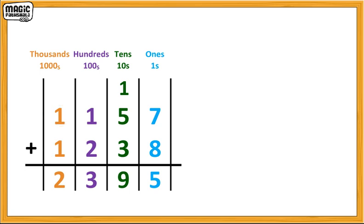So, one-thousand one-hundred-and-fifty-seven plus one-thousand two-hundred-and-thirty-eight gives us two-thousand three-hundred-and-ninety-five. This is the total number of flowers they have collected for Thad's garland.